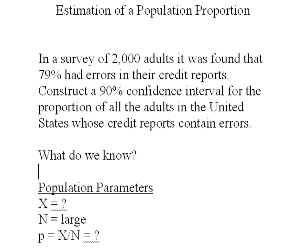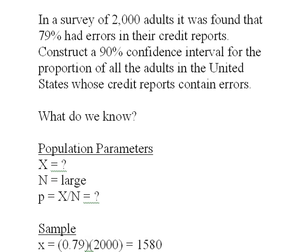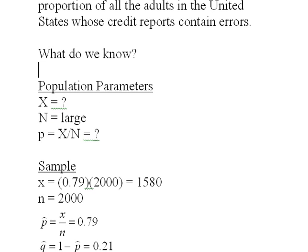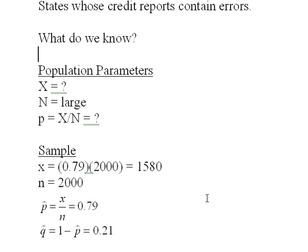We know very little about the population parameters — that is, the number of people in the United States who have credit report errors. We don't know that, but we know that the population N is large. We certainly don't know the proportion of people who have errors in their credit reports. So we do take a sample of 2,000, and we know just about everything about the sample.